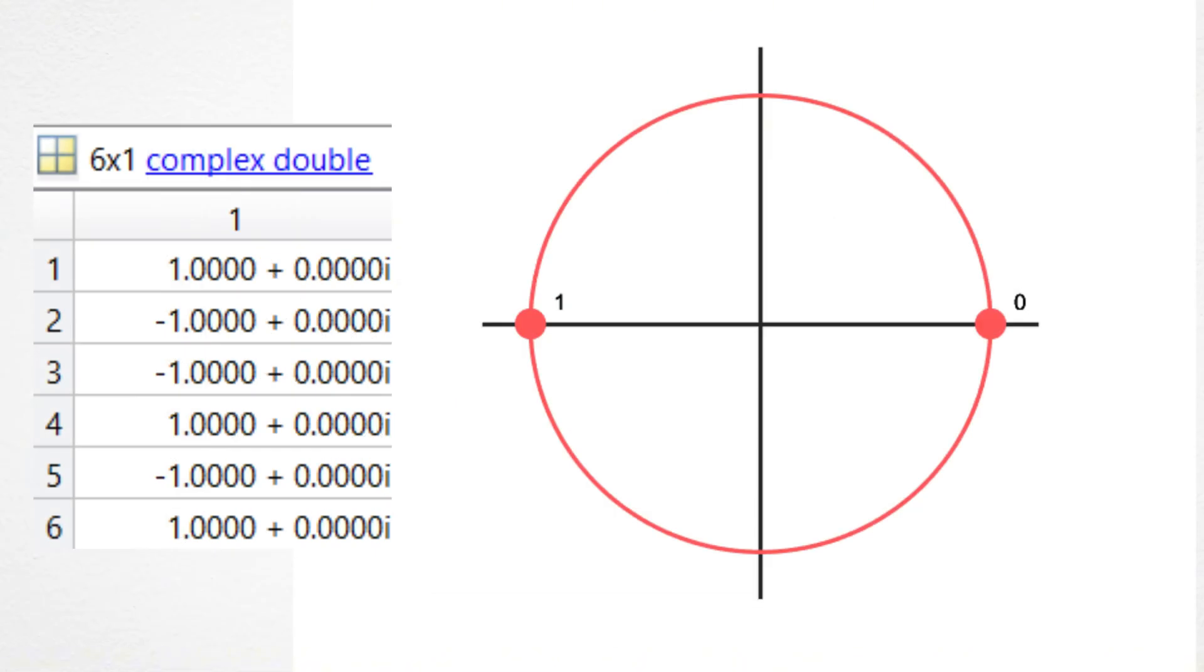As you can see, the PSK symbols variable contains 1 for 0 bits and negative 1 for 1 bits, representing a 180 degree phase shift. This can also be observed in the constellation plot on the right.